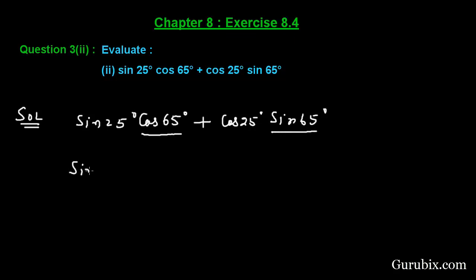sin 25° will remain the same. We can write this cos 65° as cos(90° - 25°). Here we have cos 25° and sin 65° as sin(90° - 25°).